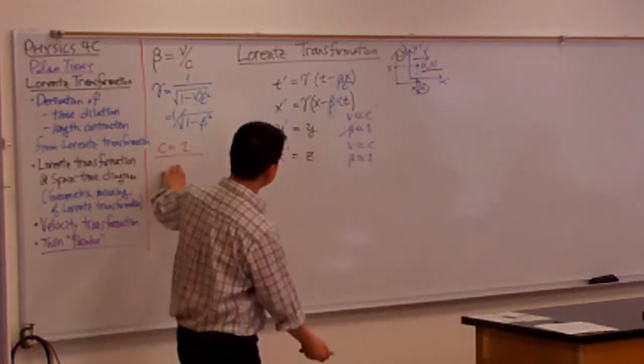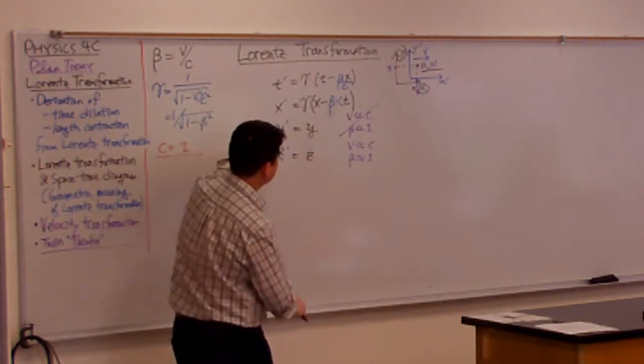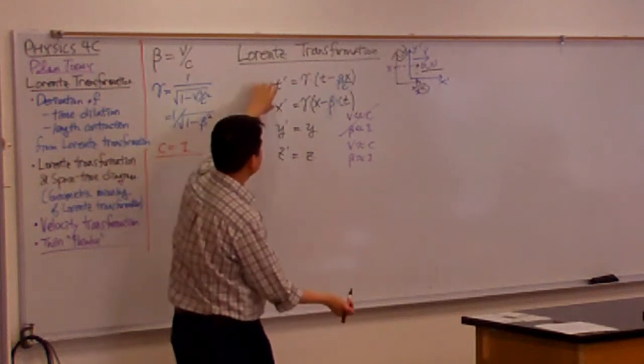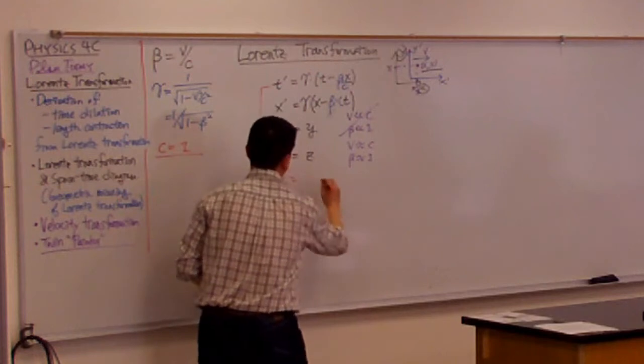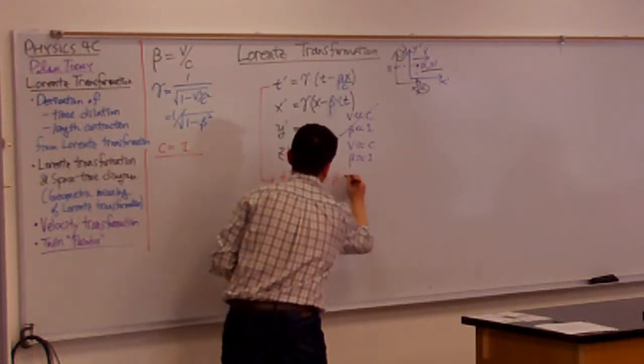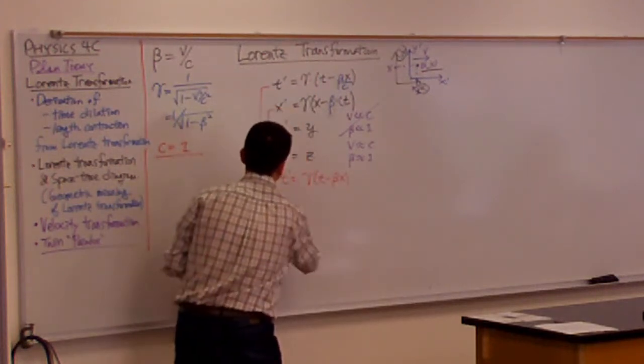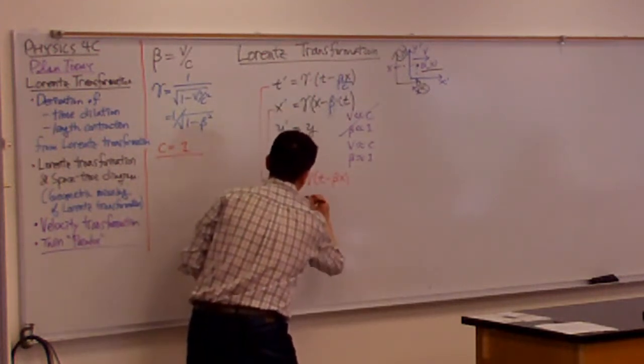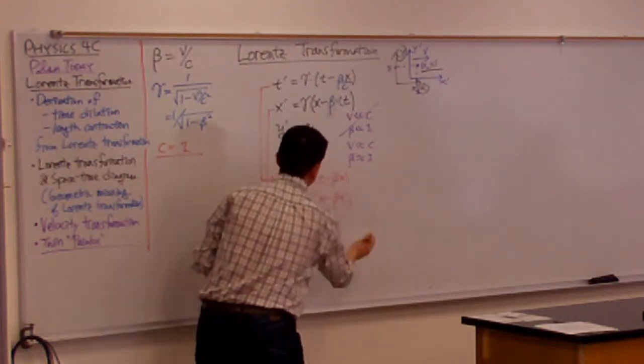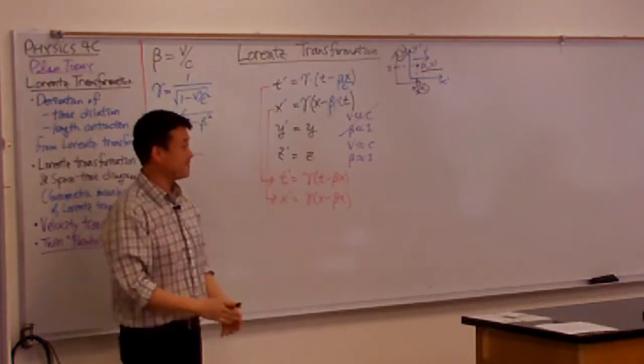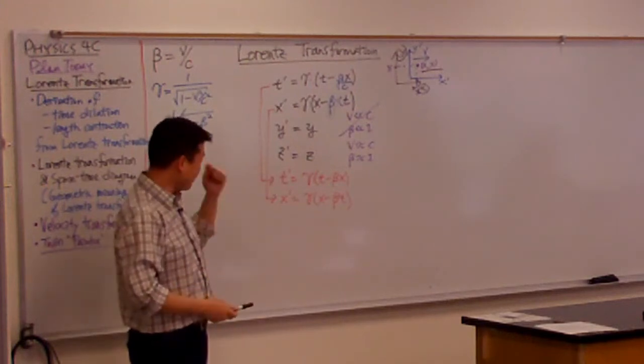So with this convention, this is how this expression simplifies. It simplifies down to, let me skip this because they don't do anything. The top line becomes T prime equals gamma T minus beta X because no more C. X prime becomes X prime equals gamma X minus beta T. Look at the symmetry. It's a lot easier expression to memorize.